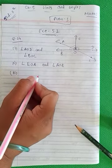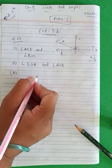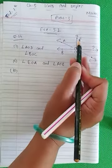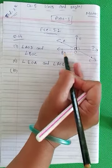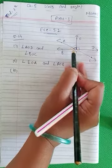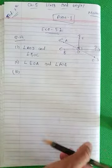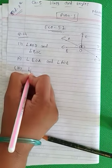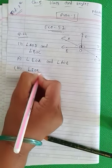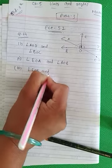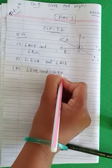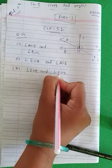Then after, third number: equal supplementary angles. Equal bhi honay chahiye aur supplementary angles bhi honay chahiye. Toh woh kaun se milenge — angle EOB and angle EOD. Do you know, 90-90? So angle EOB and angle EOD.